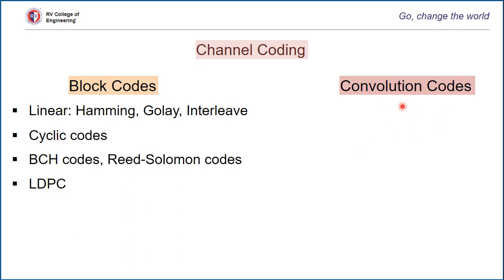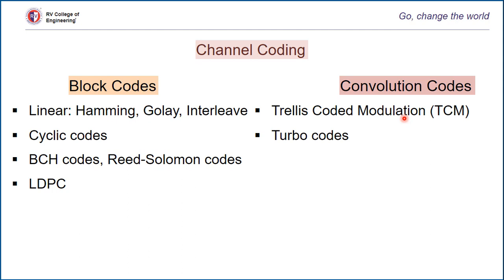As a result of the wide acceptance of convolution codes, there have been many advances to extend and improve the basic coding scheme. This advancement has resulted in two new coding schemes known as trellis coded modulation (TCM) and turbo codes. TCM adds redundancy by combining both coding and modulation into a single operation. The unique advantage of TCM is that there is no reduction in data rate or expansion in bandwidth, as required by most other coding schemes.